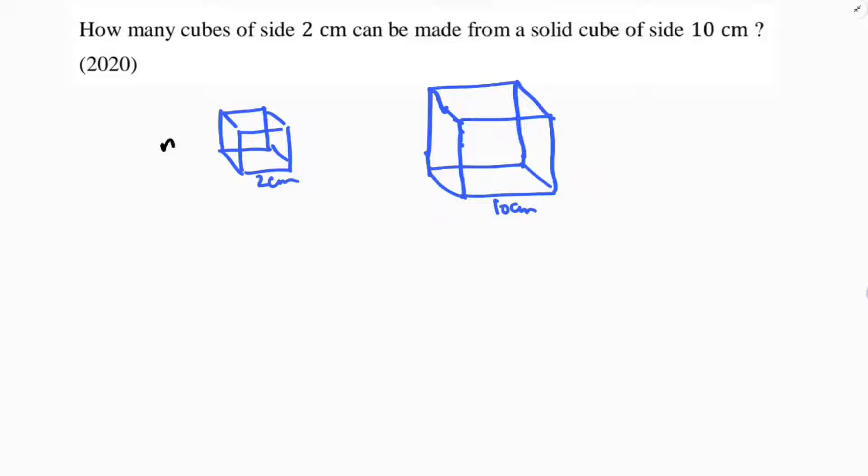So, n times the volume of the small cube equals the volume of the big one. N times the number of small cubes—just write n and try to find out the value of n.